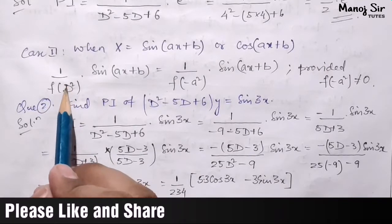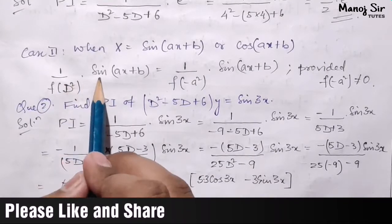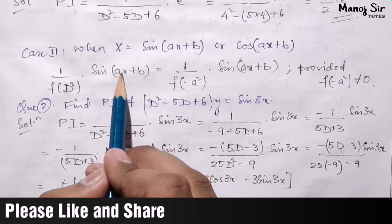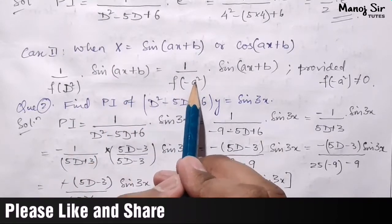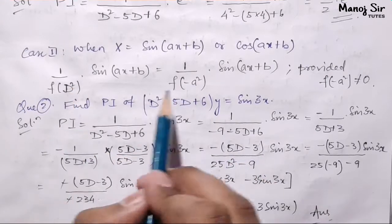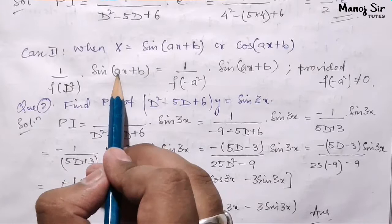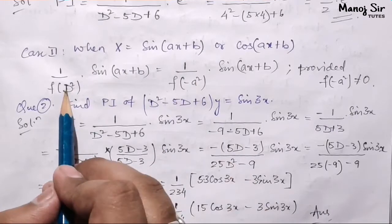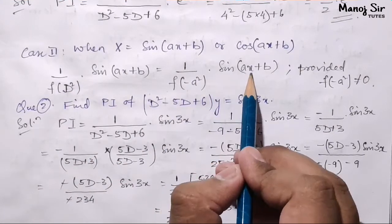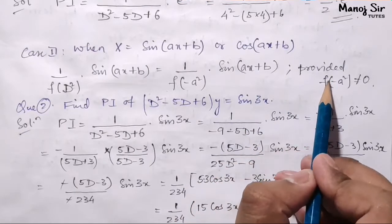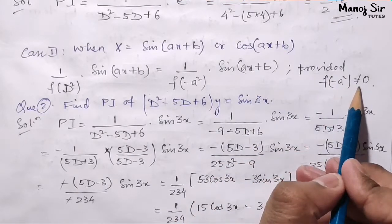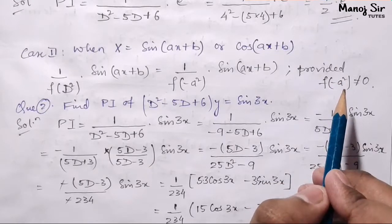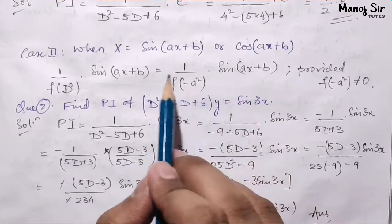So, one upon f of D squared, into sine of ax plus b — in place of D squared, what we are going to do is: this coefficient of x is a, so we replace D squared with minus a squared. That means we write minus a squared in place of D squared, into sine of ax plus b, provided that f of minus a squared should not be equal to zero. I have made a separate video to deal with that case — that is video number 10.